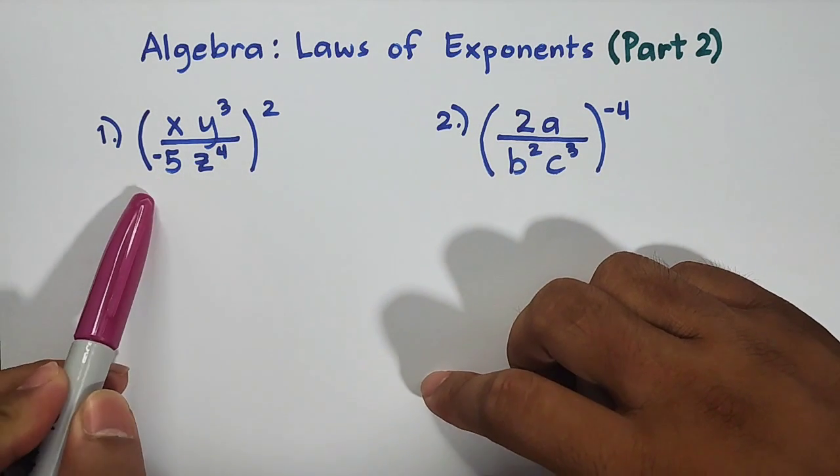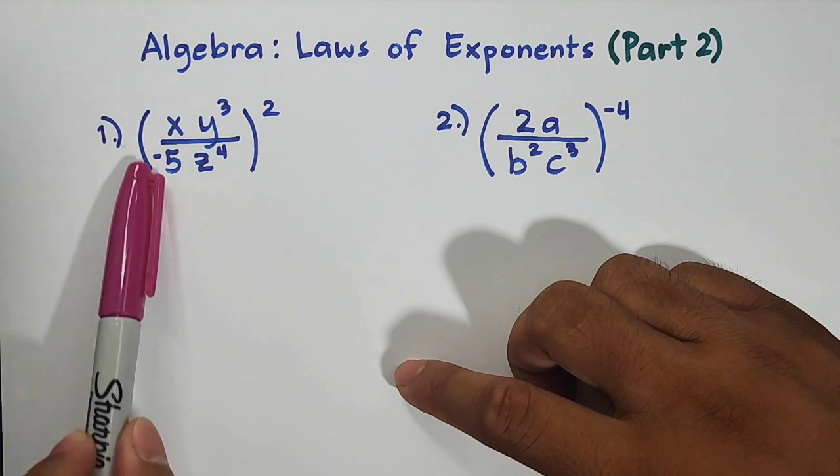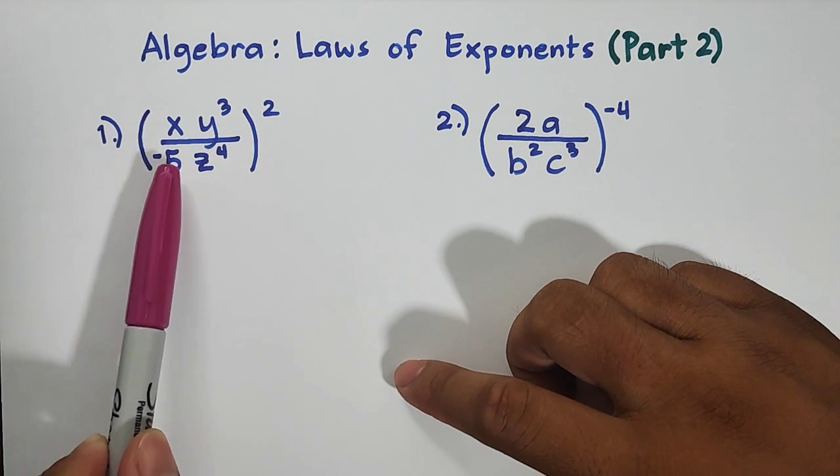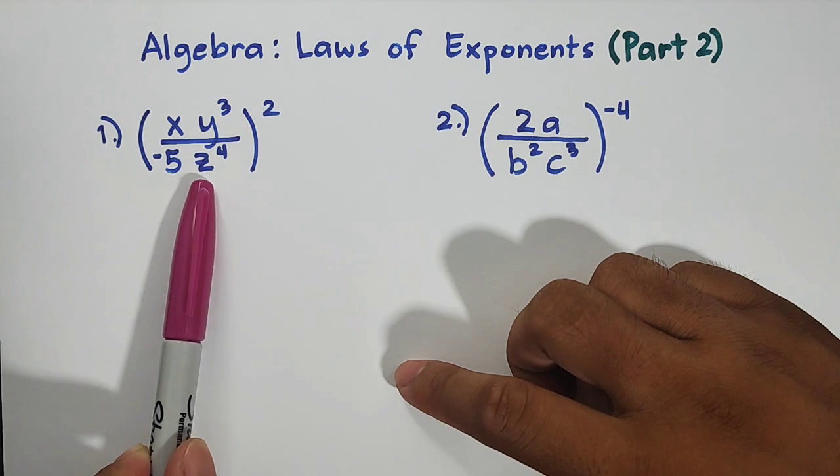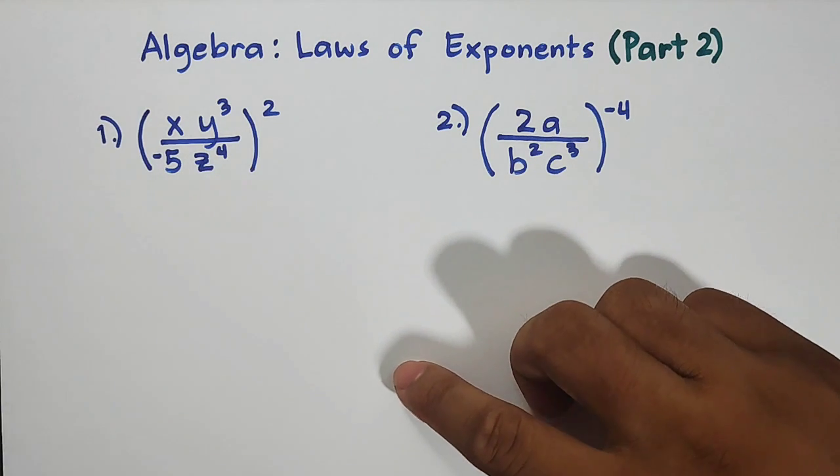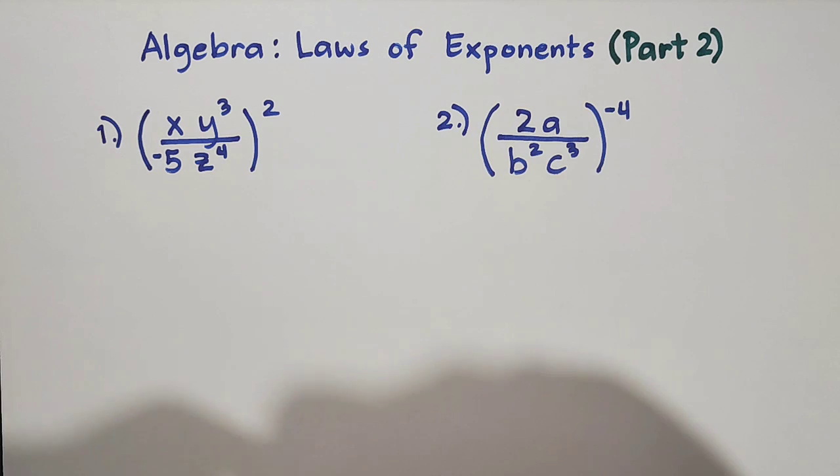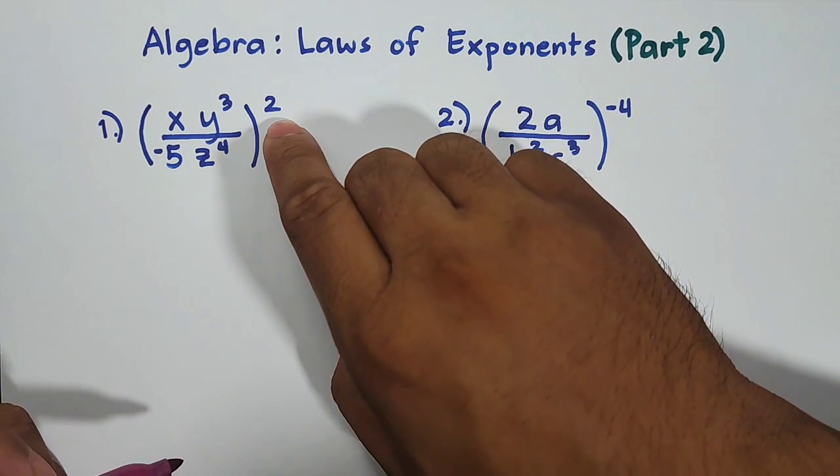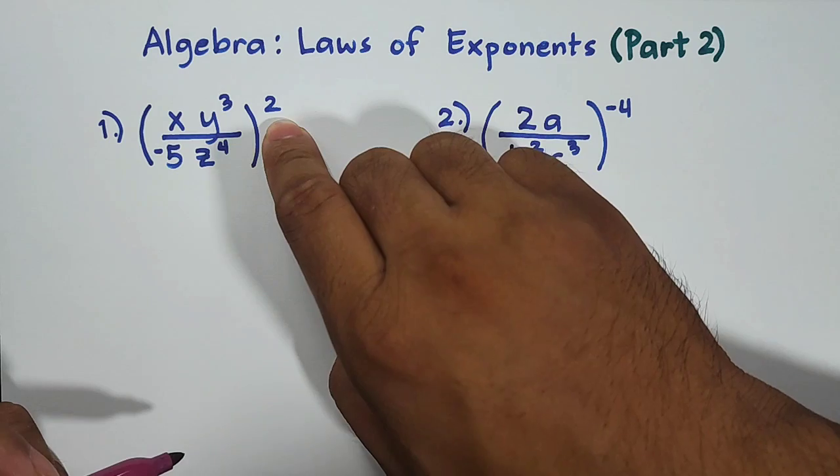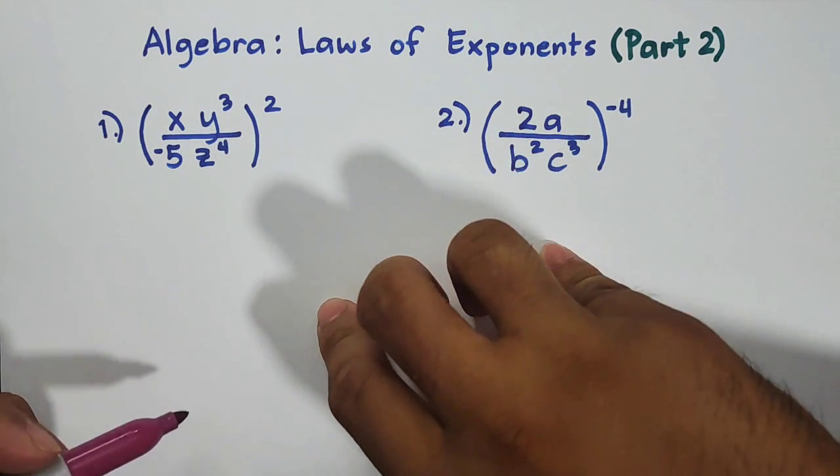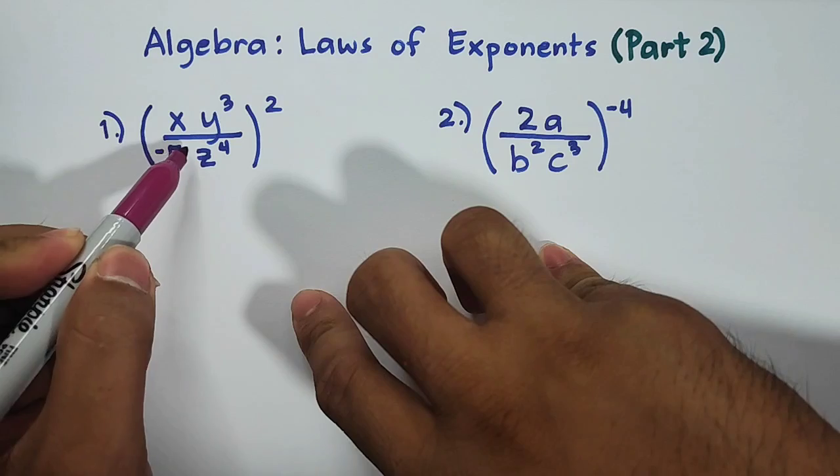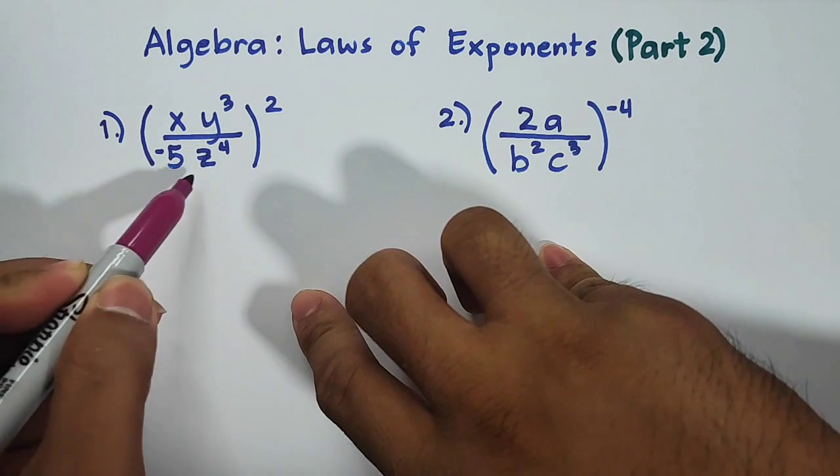So we have here the first example, in which the given expression is x y cubed over negative 5 z to the 4th power, squared. So how are we going to simplify this kind of expression with exponents? As you can see, we have here the exponent of 2 outside the parentheses, meaning we need to multiply all the exponents of our bases inside these parentheses.